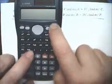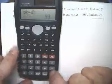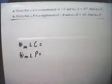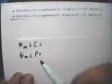have to be 90. So if I do 90 take away 47, I get 43, so the measure of angle C is 43.